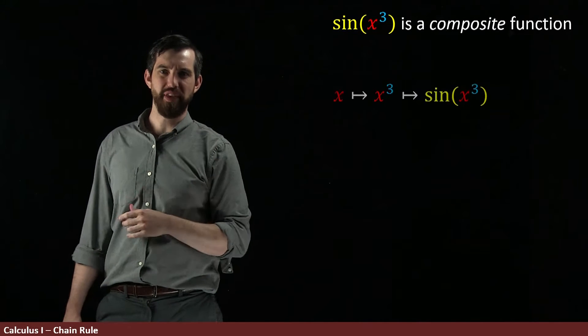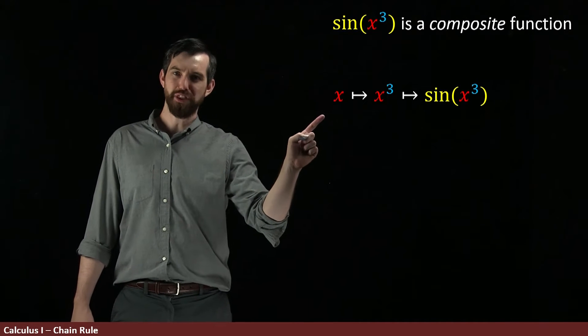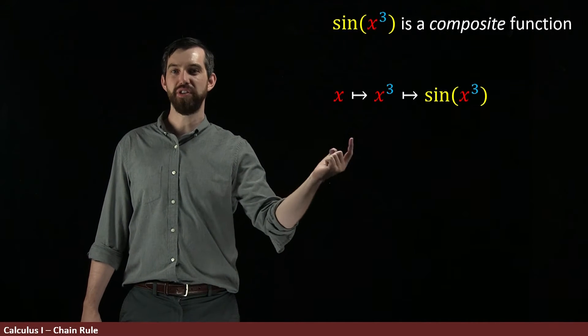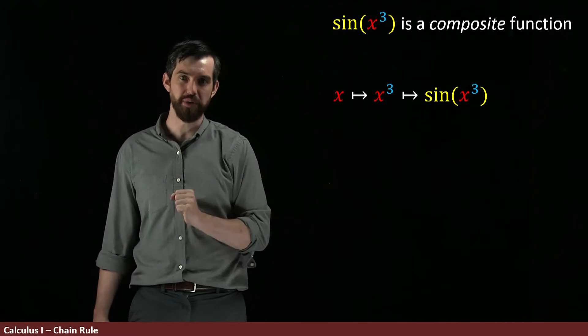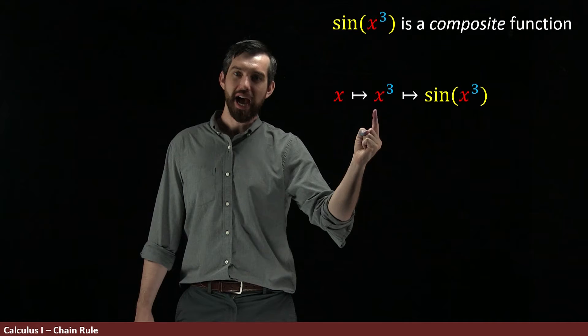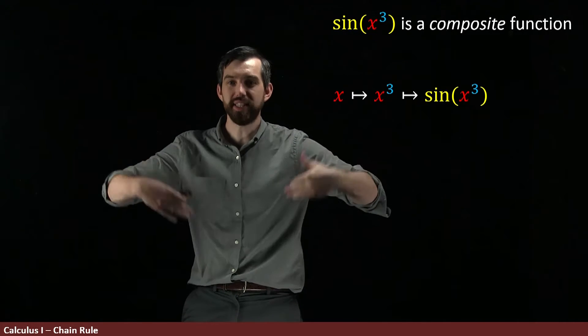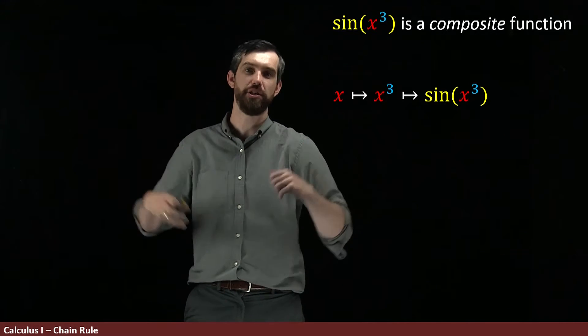Another way to think about this is that you start with the variable, then under the so-called inside function, you cube it and turn it from x to x cubed. And then based on the outside function, you take sine of whatever you had, sine of x cubed.